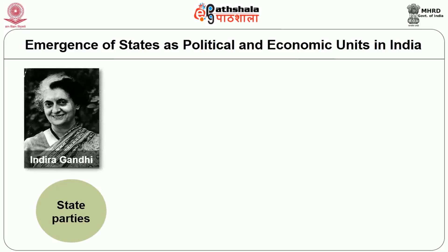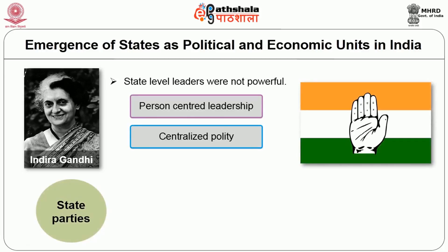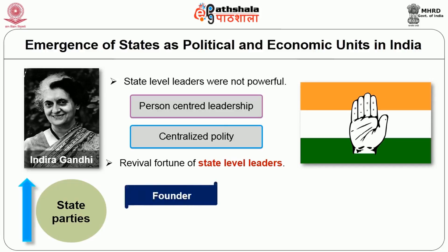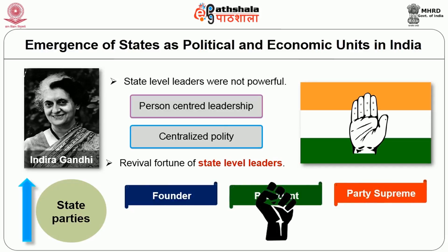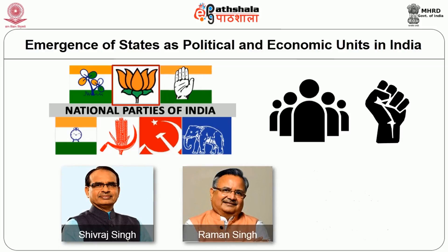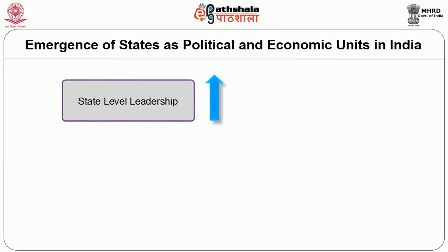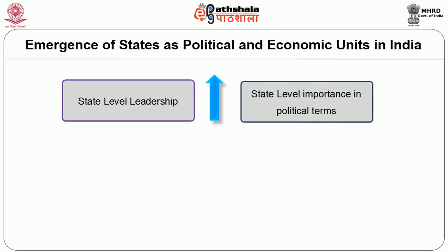During the period when Indira Gandhi was Prime Minister, state-level leaders were not really powerful because the center had become too powerful and there was a person-centered, centralized leadership with the passing away of the old generation of Congress leaders. But in recent times, especially with the rise of state parties, there is a revival of the fortune of state-level leaders. Even state-level leaders of national parties are increasingly becoming very powerful — in BJP you have Shivraj Singh Chouhan, Raman Singh, Vasundhara Raje — they are all powerful leaders in their own right. With the rise of state-level leadership, the importance of the state in political terms also rises.